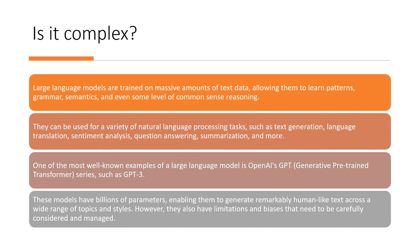Is LLM really complex? It really is. Large language models are trained on massive amounts of text data, and from that the learning happens — the grammar, the semantics, and even the level of common sense reasoning is included as part of this. They can be used for a variety of natural language processing tasks which include text generation, language translation, sentiment analysis, question answering, summarization, and many more. So it is really complex stuff.